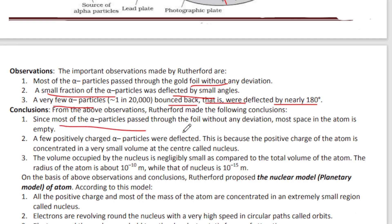Conclusions from the observations: Most of the alpha particles passed through the foil without any deviation, which means most of the space inside the atom is empty.